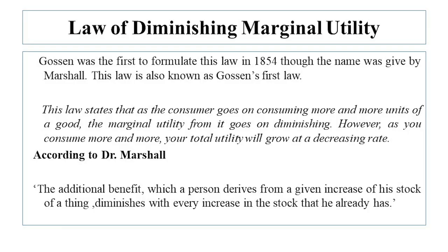Now we will study the law of diminishing marginal utility. Gossen was the first to formulate this law in 1854, though the name was given by Marshall. This law is also known as Gossen's first law. One of the fundamental ideas behind demand theory, this law states that as the consumer goes on consuming more and more units of a good, the marginal utility from it goes on diminishing.